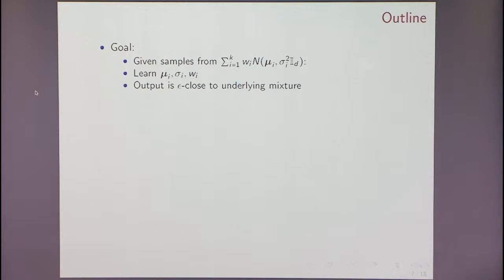So I have only one very important slide. That's this one. So just to recap, we get samples from a mixture. You want to learn the means, the variances, and the weights. You want to output something which is epsilon close to the underlying one. And there are no assumptions on this problem.